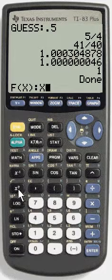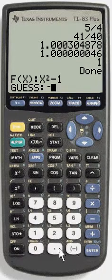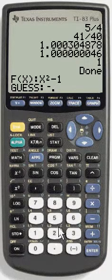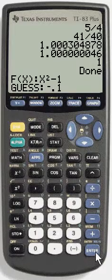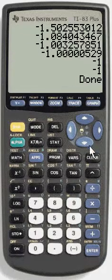But suppose with the same function we wanted the other one so let's give it a negative guess. It could be anything negative really because there's only one on this side so keep guessing and it stops.